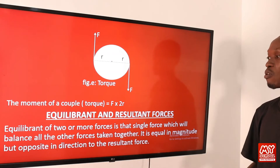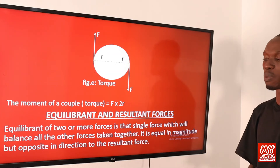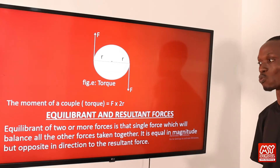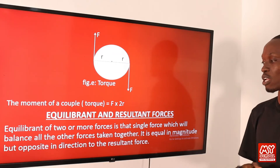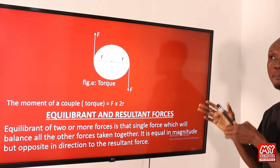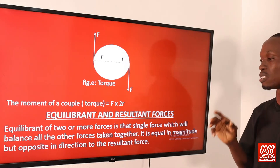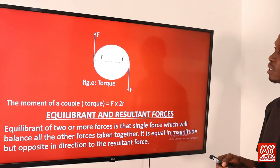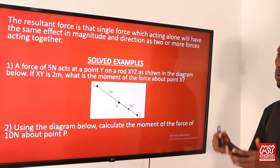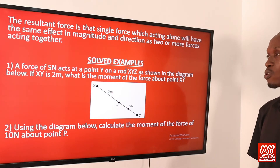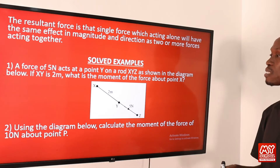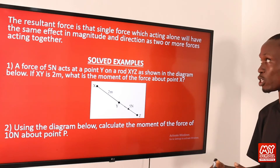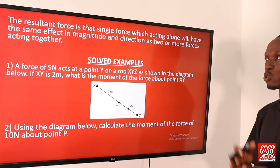The equilibrate of two or more forces is that single force which balances all the other forces taken together. It is equal in magnitude but opposite in direction to the resultant force. The resultant force is that single force which, acting alone, will have the same effect in magnitude and direction as two or more forces acting together.